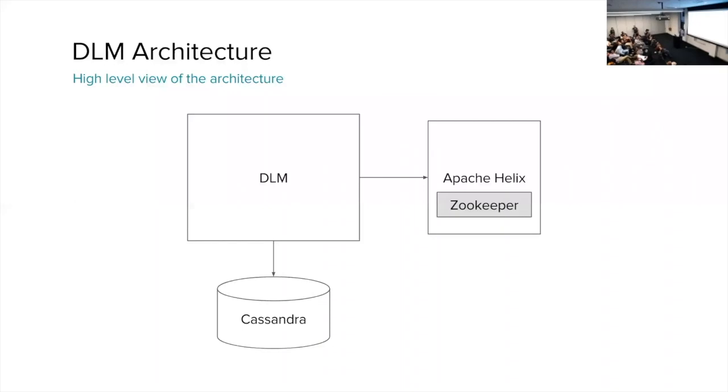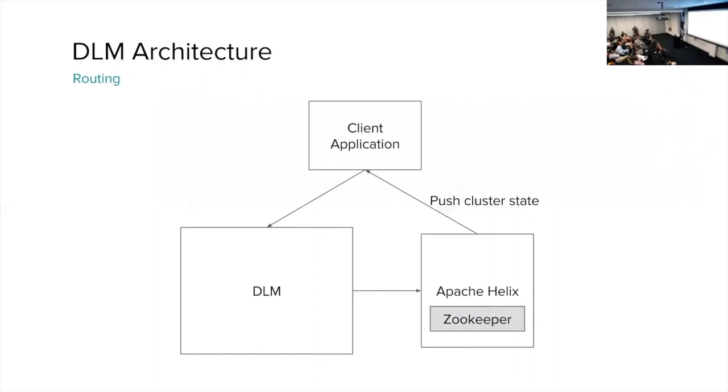Here we're diving into how routing works for DLM. DLM's cluster state management, Apache Helix, will push any of its cluster states up into the client application, where a fat client will keep mapping of the partition ownerships so that when we need to route a request to a DLM worker, we know where to send it.